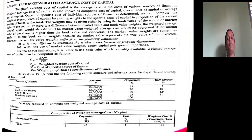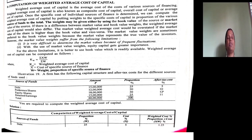What is 'weight' here? Weight indicates the proportion of each and every source of financing to the total capital. What is the portion of debt in total capital? What is the portion of equity in total capital? What is the portion of preference in total capital? What is the portion of retained earnings in total capital? That indicates weight.